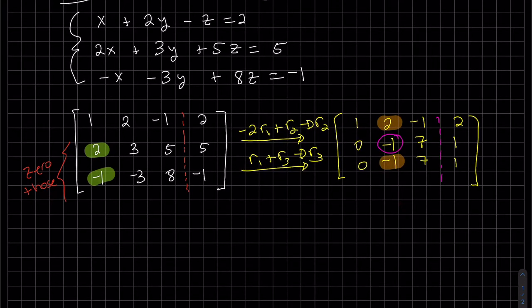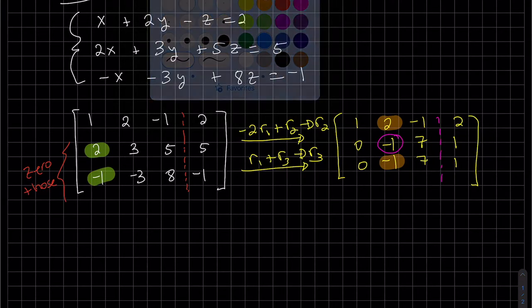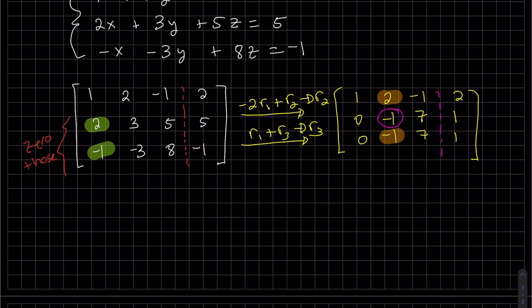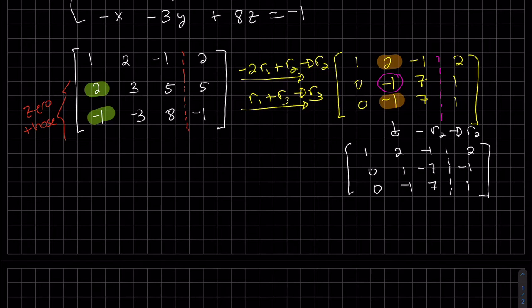We want a one here and then zero out the other two. Since it is a minus one, you could multiply by a negative now or do it later. I'll keep with my algorithm, but you see you don't have to strictly stick to it once you understand the process. So I'm going to go minus R2 to R2, keeping the others the same.